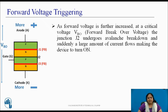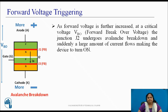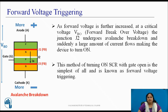As this forward voltage is increased to a specific voltage, i.e., forward break-over voltage VBO, the reverse biased junction J2 undergoes avalanche breakdown, which causes a large amount of anode-to-cathode current to flow through the device, suddenly turning the device ON. This simplest method of turning on SCR is known as forward voltage triggering.